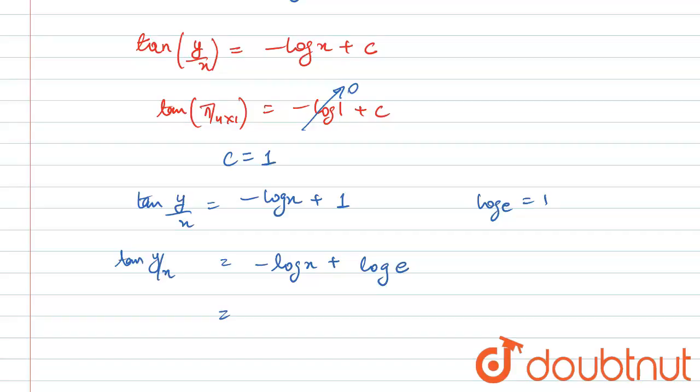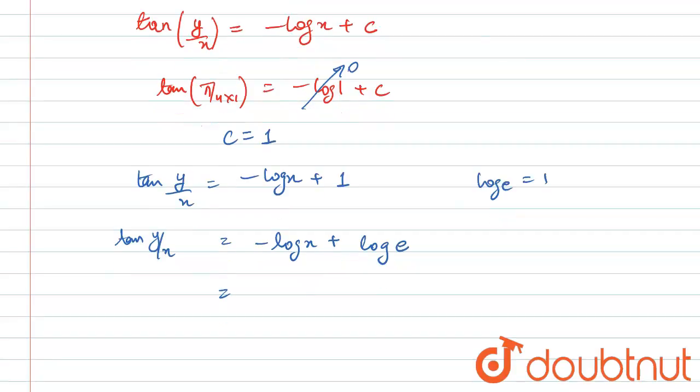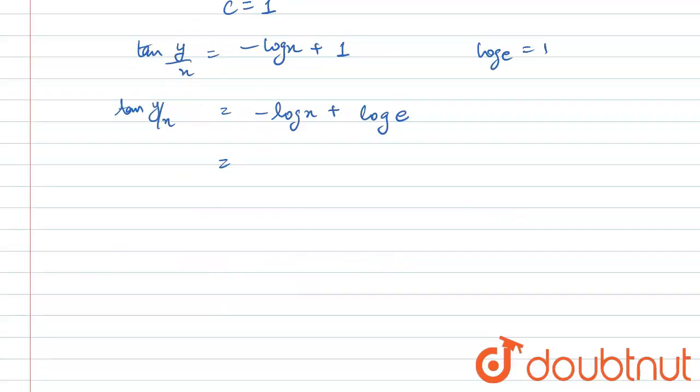By using the log property, this is represented as log(e/x), so tan(y/x) = log(e/x). From here, we find the value of y, which comes out to be y = x tan⁻¹(log(e/x)). This is the required equation of the curve.